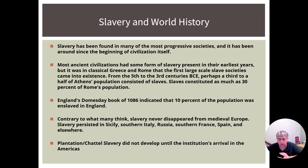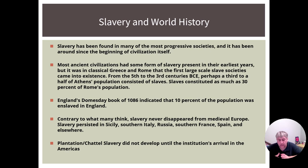The English Domesday Book was commissioned by William the Conqueror in the year 1085 and published in 1086. It's a population survey that William the Conqueror used so he knew how to raise taxes to pay for his army. The Domesday Book surveyed the wealth and assets of all of his subjects, and what it revealed is that as early as 1086, 10% of the English population were slaves.